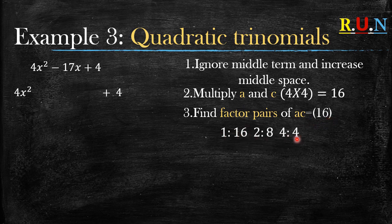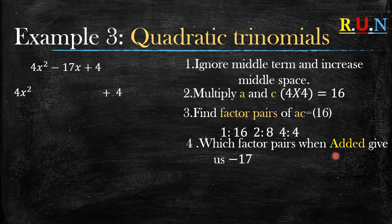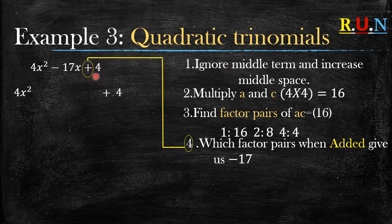Find the factor pairs of 16. Which factor pairs when added give us negative 17? We use addition again here because there is a positive sign in front of our c, which is 4. The sign in front of c determines whether we use addition or subtraction when dealing with factor pairs.